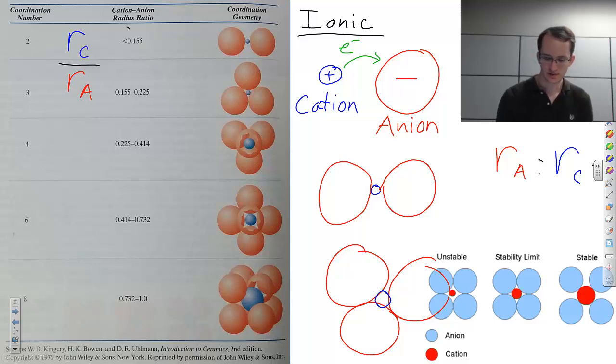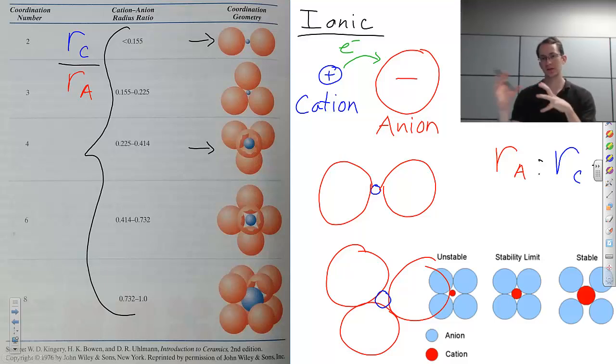And that's what these numbers are. These are the cation anion ratio numbers. And so if your ratio is less than 0.155, you can only form this type of structure. You can only fit two anions around a single cation. If it's between 0.225 and 0.414, you can actually fit four anions around a single cation. And so this relative size between the anion and cation will change the type of crystal structures that you can make.